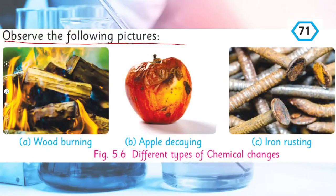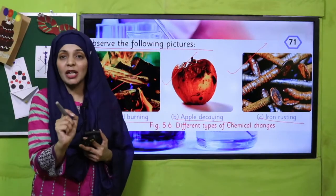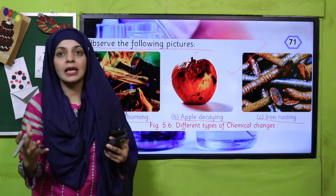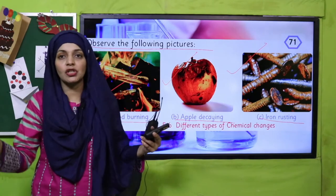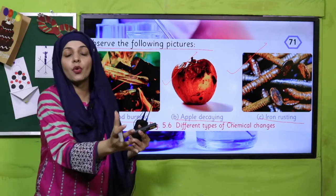Observe the following pictures: burning of wood, apple decaying, iron rusting. Burning wood, a rotting apple, and a rusting nail — all of these are examples of chemical changes. We call them chemical changes, and these are irreversible changes. You cannot change them back to their original state.